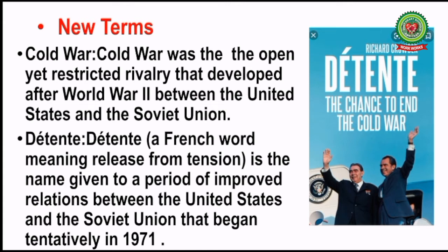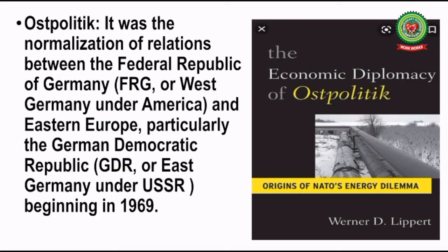The next term is 'détente,' a French word meaning release from tension. It is the name given to a period of improved relations between the United States and the Soviet Union that began tentatively in 1971. Détente means relaxation of the intense relations between USA and USSR. In the 1970s, the presidents of both countries started visiting each other's countries, resulting in improvement of relations between both superpowers.